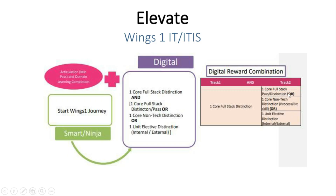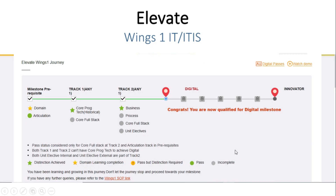Not only core free stack — you can also choose non-tech distinction, which is process business skill. You can also consider elective distinction, whether it may be internal or external certification. External means Microsoft or AWS provided certifications.